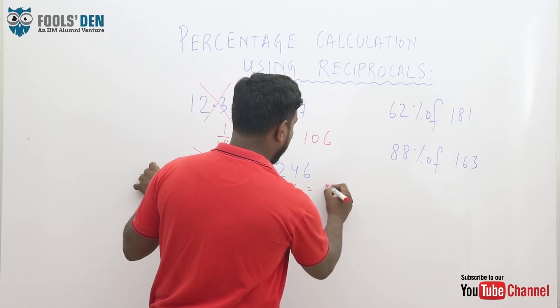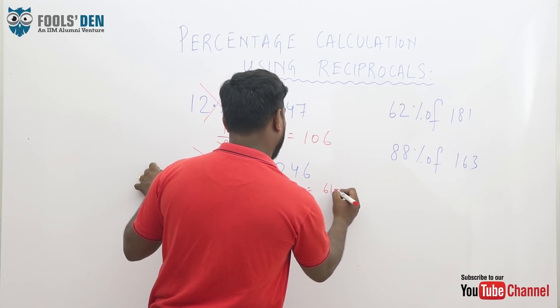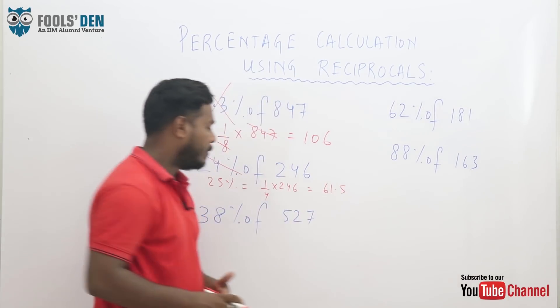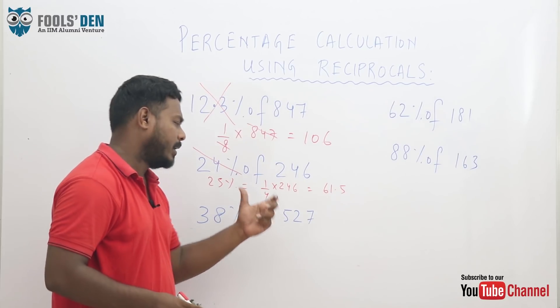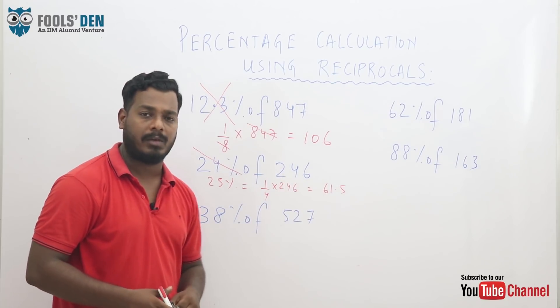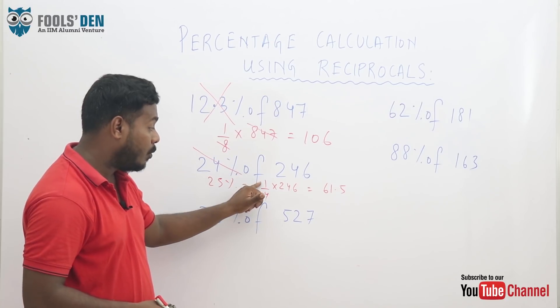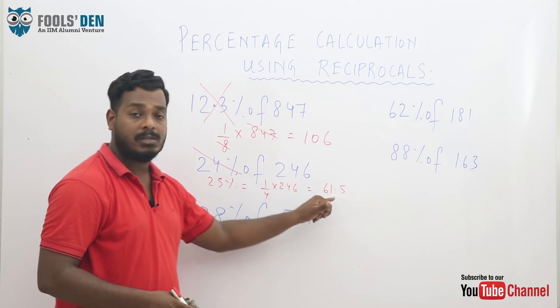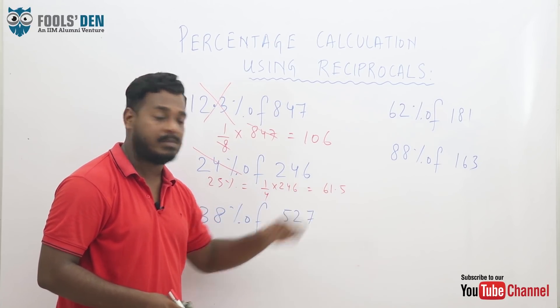246 divided by 4, it will be approximately 61.5. The exact value is 61.5. So this percentage we have converted into fraction and solved it. That saves a little time.